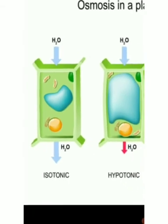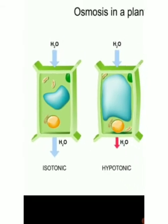You can compare these two pictures. Which one is bulged? In hypotonic solution, you can see the cell is bulged, and in isotonic solution it is normal. So these are the two cases. Now let us move on to another case.